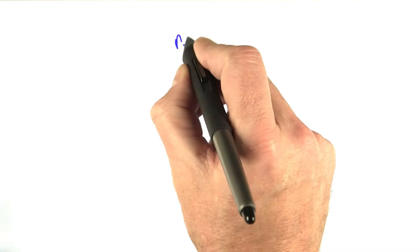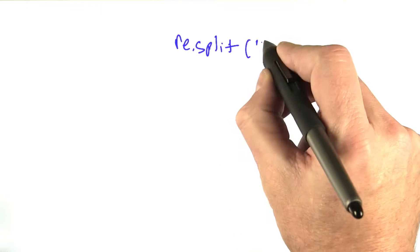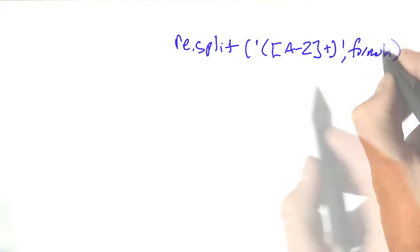Let's take a look at what we did here. We had re.split, and then this regular expression, and then out of the formula. What does this say?